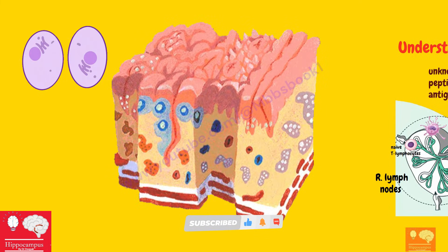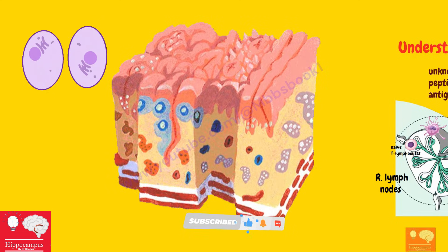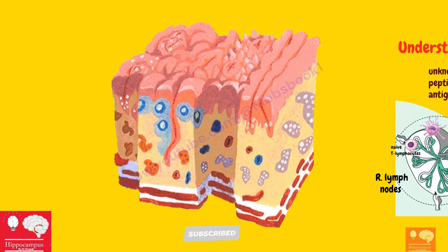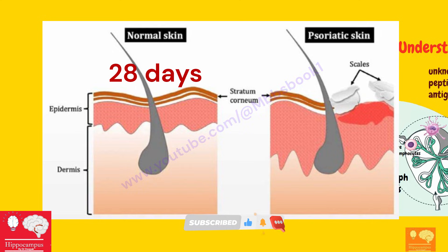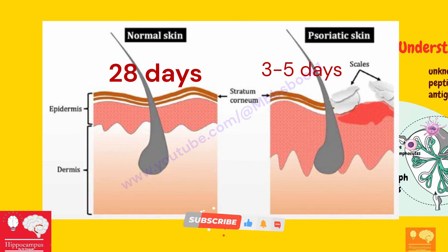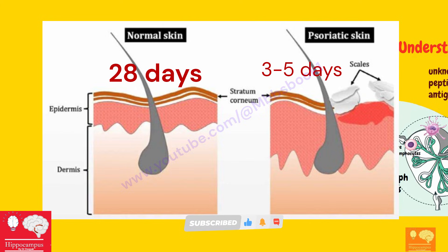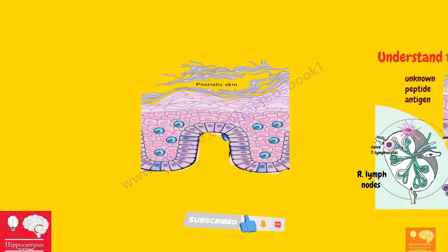The basal cells start dividing too much. So much basal cell division gives you parakeratosis and hyperkeratosis. There is something known as epidermal transit time, which changes in psoriasis. Epidermal transit time means the time to go from stratum basale to stratum corneum. The time taken in a normal person is 28 days. Whereas in a patient of psoriasis, due to this epidermal hyperproliferation, the whole process is shortened to a mere 3 to 5 days.